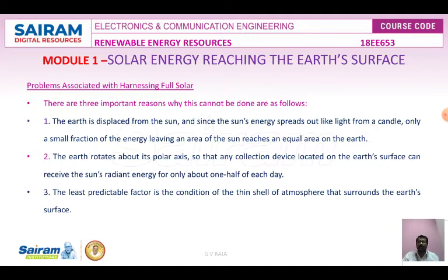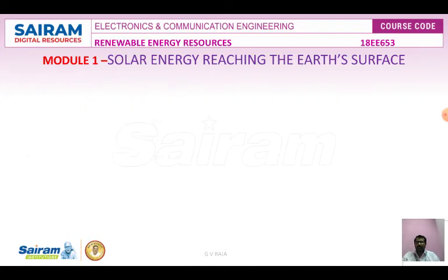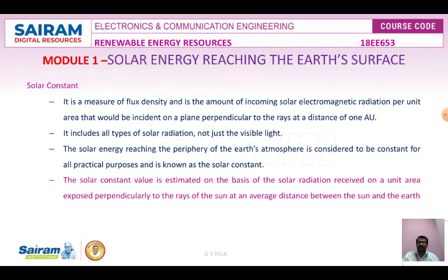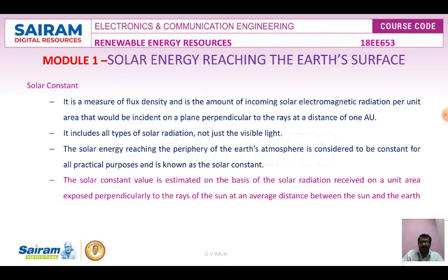The solar constant is a measure of flux density — the amount of incoming solar electromagnetic radiation per unit area. It includes all types of solar radiation, not just visible light. Solar energy reaching the periphery of the Earth's atmosphere is considered to be constant for all practical purposes and is known as the solar constant. Its value is estimated on the basis of solar radiation received on a unit area exposed perpendicular to the rays of the Sun.